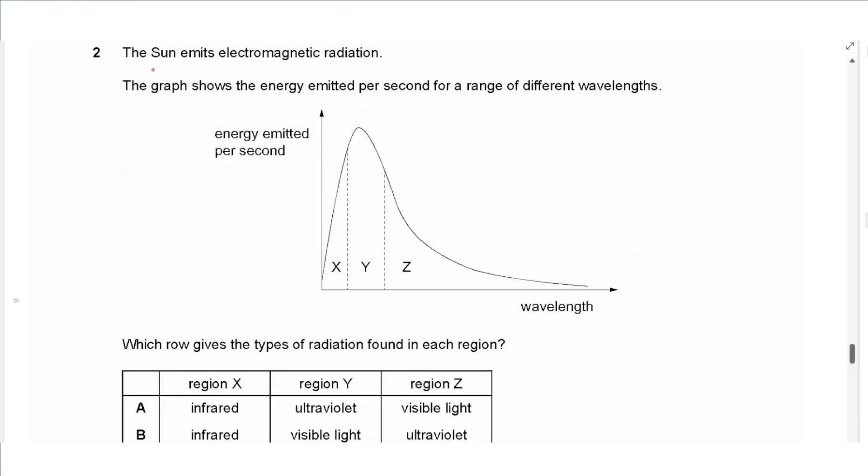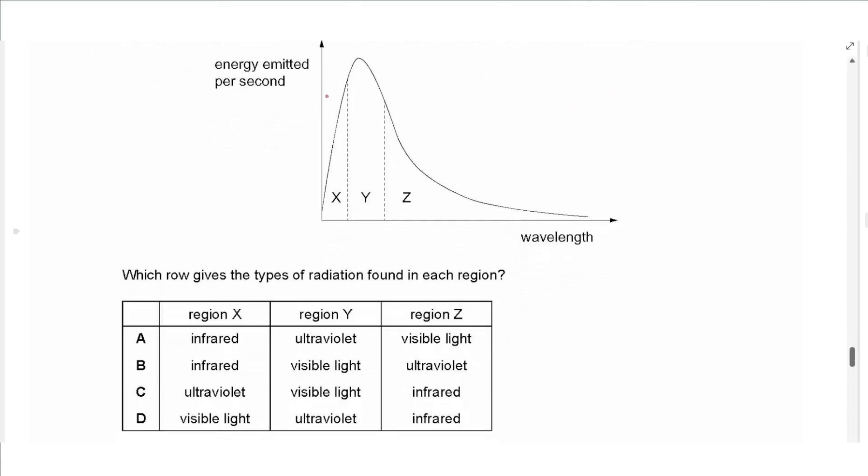The next question says, the sun emits electromagnetic radiation. The graph shows the energy emitted per second for a range of different wavelengths. We have most of the radiation is in the middle at Y, and the wavelength increases in this direction. So, this is short wavelength, this is long wavelength. The radiation which has the shortest wavelength emitted from the sun with high intensity is the ultraviolet. So X is ultraviolet, and the middle is visible light. And with the longest wavelength, we have infrared radiation, so the answer is C.